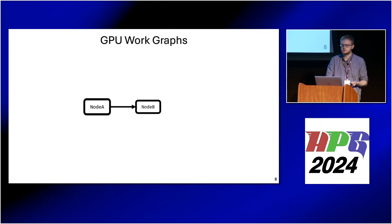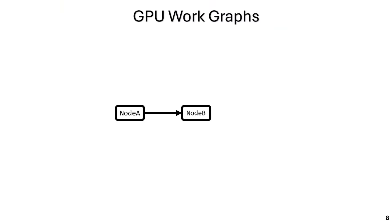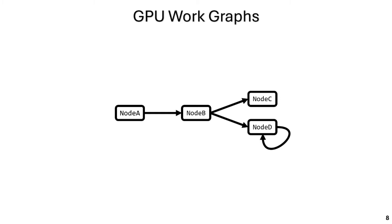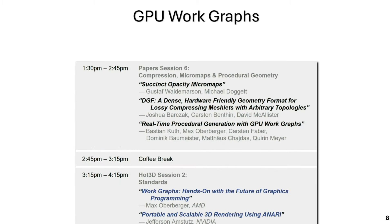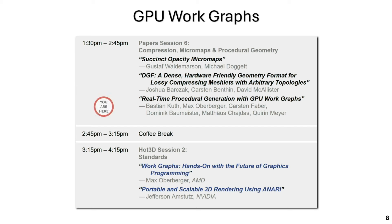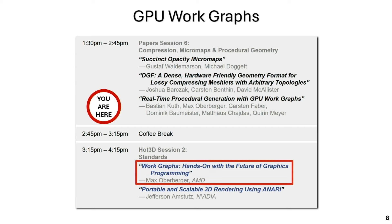This would be a very simple work graph but you can go more complicated — for example, node B could create work items for node C or for node D which creates work items for itself. This was a very brief introduction; you will get a more thorough one after the break by Max.